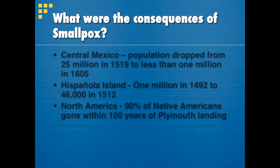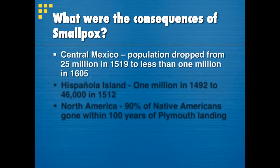Smallpox was by far the worst of the diseases transmitted and definitely had the largest impact on native peoples. Our left side question is: what were the consequences of smallpox? In central Mexico, where the Aztecs lived, the population dropped from about 25 million when Hernán Cortés showed up in 1519 to less than 1 million in 1605. In approximately 85 years, the population dropped 24 out of every 25 people — more than 90%.